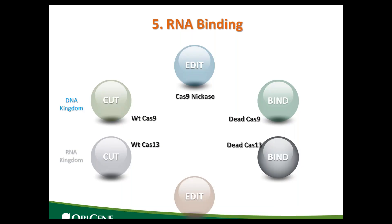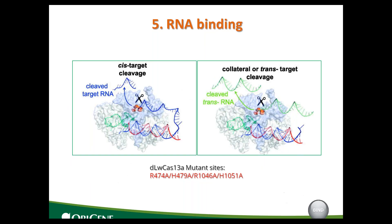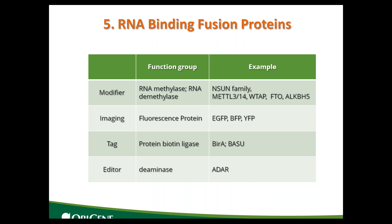Next, we will talk about RNA bind. Just like DNA bind, RNA bind also relies on dead Cas13. We already know Cas13 has two different enzymatic activities: specific enzymatic activity, also called cis cleavage, and non-specific activity, also called trans cleavage. If we introduce mutations to abolish these two activities, we get dead Cas13. Just like dead Cas9, dead Cas13 can grasp RNA very tightly. We also can use this property to fuse different effectors. For example, if you are interested in RNA methylation, you can fuse an RNA methylase or RNA demethylase onto Cas13, and then you will be able to observe changes in RNA epigenetics.